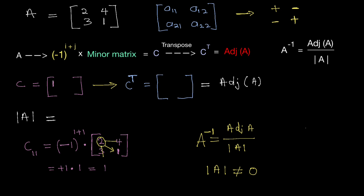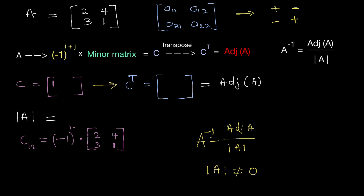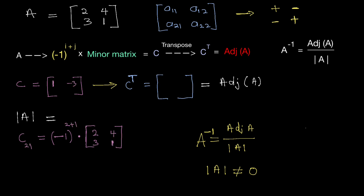For element a12, the position is 1 plus 2, so the sign is minus 1 to the power of 3, which is minus 1. Selecting element 4 at position a12, drawing horizontal and vertical lines gives a minor of 3, so C12 equals minus 1 times 3, which is minus 3. For element a21 at position 2 plus 1, the power is odd giving minus 1. Drawing lines through that element gives a minor of 4, so C21 equals minus 1 times 4, which is minus 4.